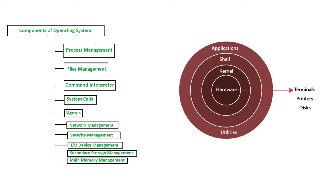An operating system comprises several key components that work together to manage a computer's resources and provide a seamless user experience. The kernel is the core component responsible for managing system resources, including the CPU, memory, and device input/output.